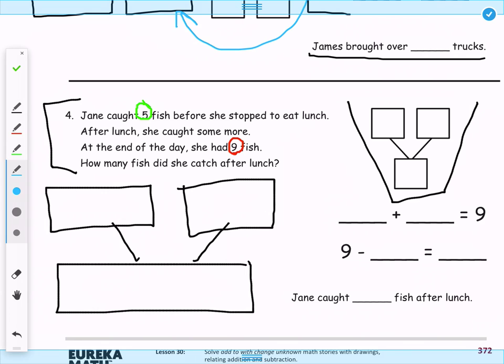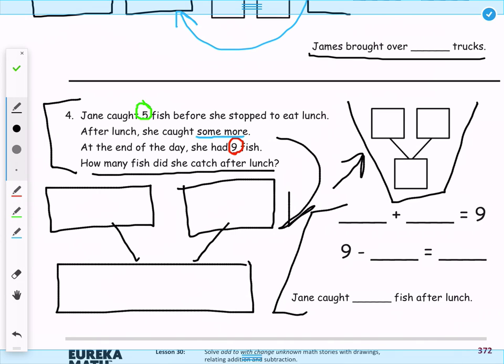And we're trying to find out how many fish she caught after lunch because it only says she caught some more. So we're going to take the numbers that we do know and plug them in to our number bond and then count on until we find how many fish she caught after lunch and use those numbers to fill out our other number bond and all of our sentences.